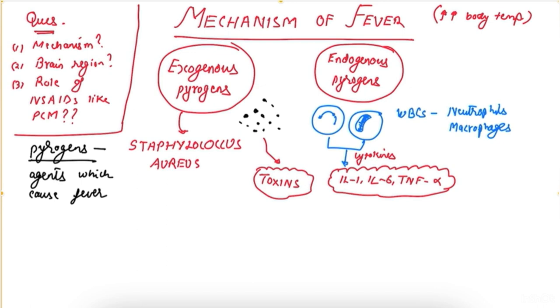These toxins and cytokines are sensed by circumventricular organs. What are circumventricular organs? These are organs of the brain located outside the blood-brain barrier.